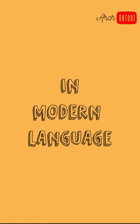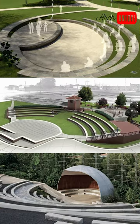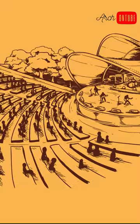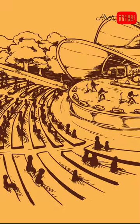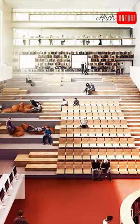In modern language, Amphitheatre is used to describe any structure with sloping seating on only one side, where the theatre or stage will be in a round shape. They can be indoor or outdoor.